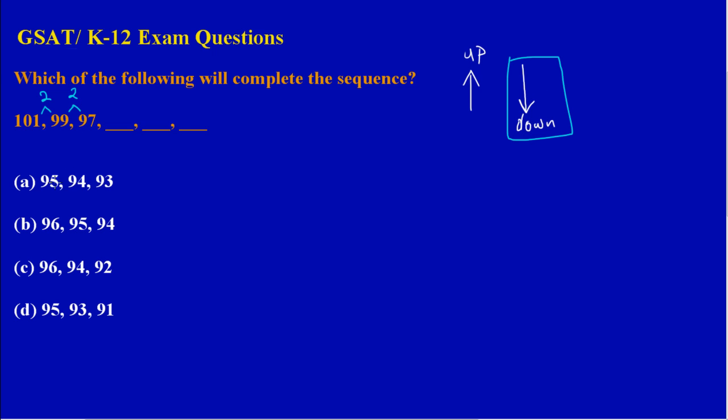We're going to look at these options—A, B, C, and D—to see which one is decreasing by 2. In option A, I have 95, then 94. This would be out because here I'm decreasing by 1. In option B, I have 96, then 95, then 94. Again, by process of elimination, B would be out because I'm decreasing by 1.